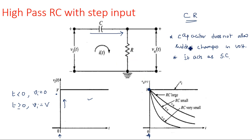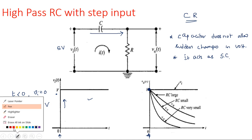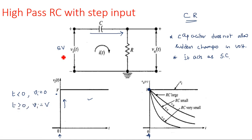After T greater than 0, the capacitor now tries to charge up to the maximum voltage we have provided at the input. Initially I am giving 5 volts — let me use red color so you can understand more clearly. This 5 volt sudden change will not appear across the capacitor, so I will go to the next slide and explain.